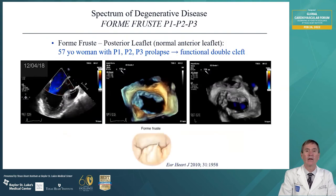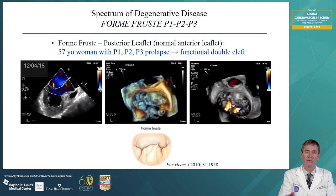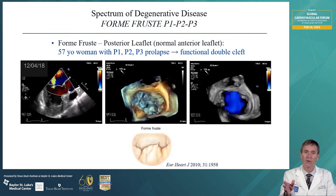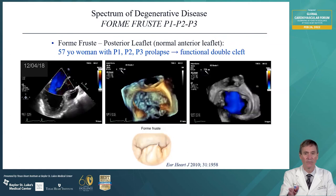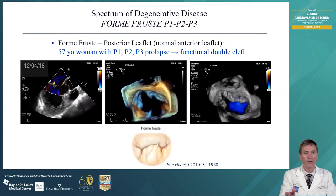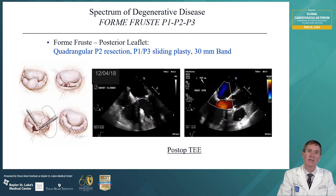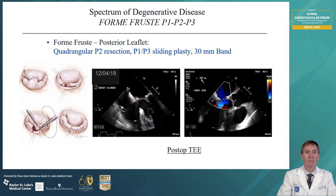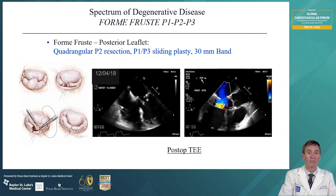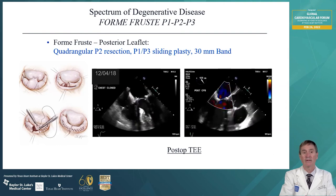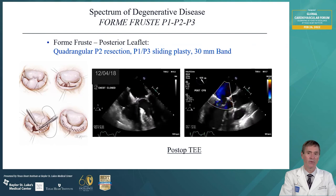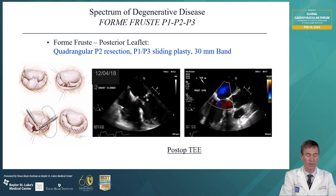Here's another form thrust with involvement of P1, P2, and P3. On the three-dimensional image to the right there's a functional double cleft, with enlargement of all three leaflet segments. In this case we had to do a bilateral sliding plasty — we resected P2, did a sliding plasty to P1, a sliding plasty to P3. We were able to bring them back together in the middle without an annular plication and then put on a 30 millimeter band, with no regurgitation postoperatively.